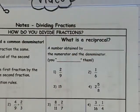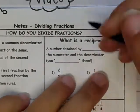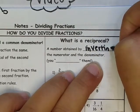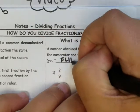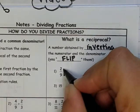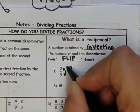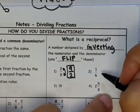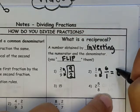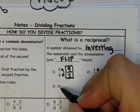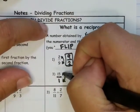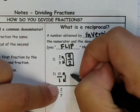A reciprocal is obtained by inverting the numerator and denominator — another way to say invert is just to flip, so you're switching the numerator and denominator. For example, the reciprocal of 2 ninths is 9 halves (9 over 2). The reciprocal of 1 sixth is 6 over 1, which reduces to just 6. For a whole number like 15, we put it over 1, then flip to get 1 over 15.